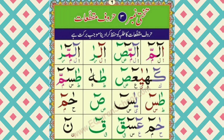مثال کے طور پر غنہ ذاتی: 'من اللہ' — اس میں نون کے اوپر تشدید نہیں ہے، نون پر زبر ہے، تو اس کو کھینچیں گے نہیں، بلکہ غنہ کریں گے اور جلدی سے گزر جائیں گے۔ یعنی 'مِن اللہ' ایسے نہیں پڑھیں گے کہ 'مِنّ اللہ'۔ اور جہاں تشدید ہو وہ غنہ زمانی ہے، جیسے 'مِنَّ اللہ' یا 'مِمَّا' — اس میں نون یا میم پر تشدید آئی ہے تو آواز کو ناک میں لے جائیں گے۔